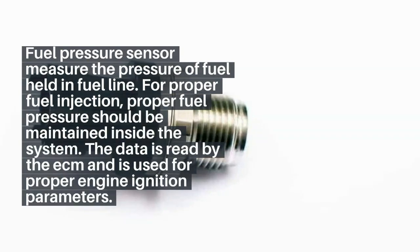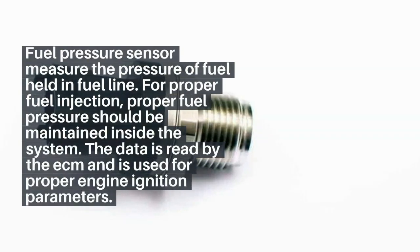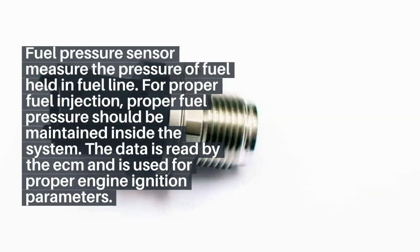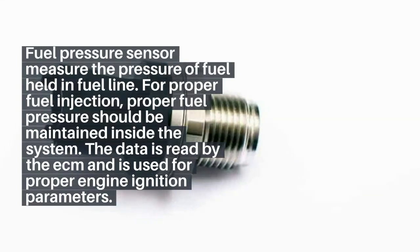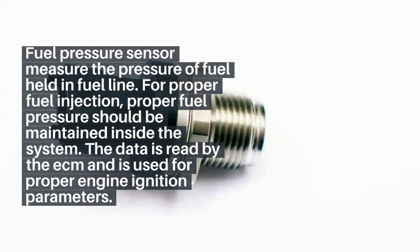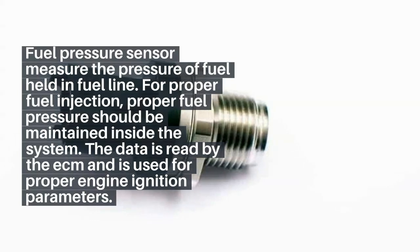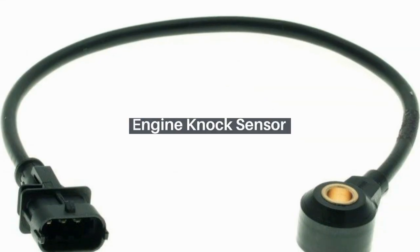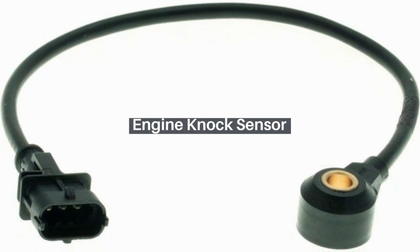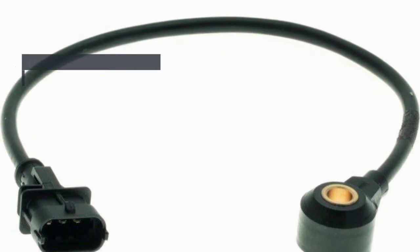Eleven: Fuel Pressure sensor. The fuel pressure sensor measures the pressure of fuel held in the fuel line for proper fuel injection. Proper fuel pressure should be maintained inside the system, and the data is read by the ECM for proper engine ignition parameters.